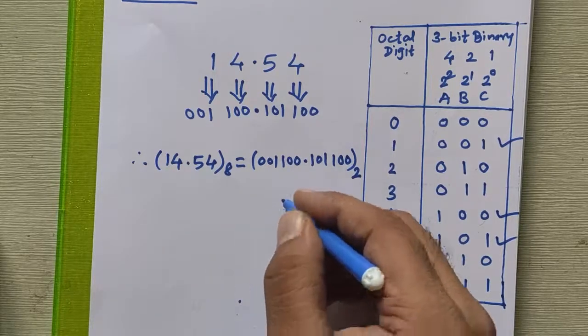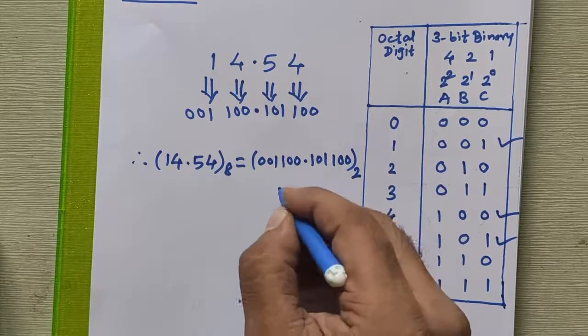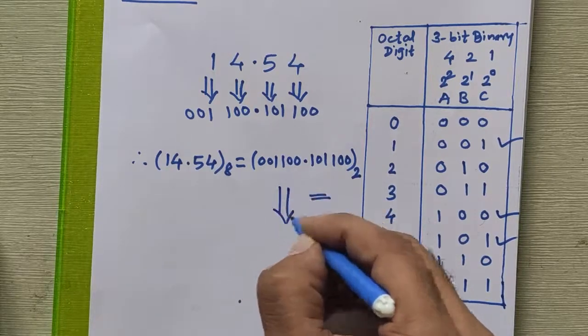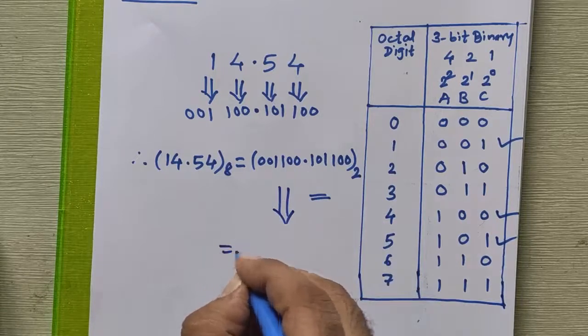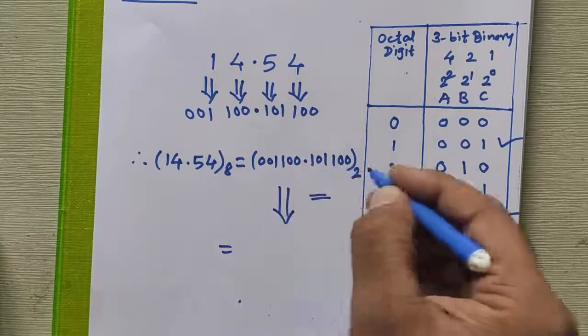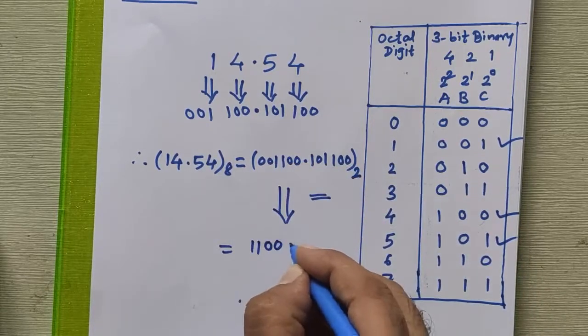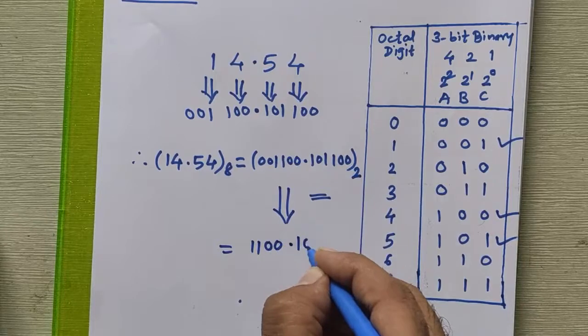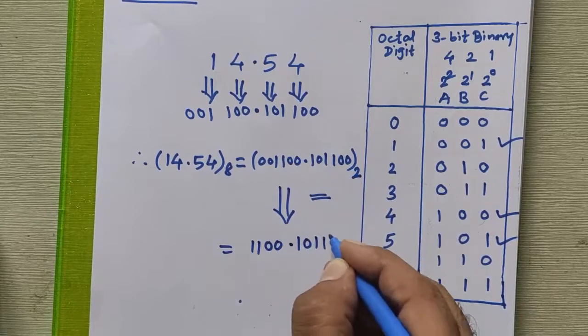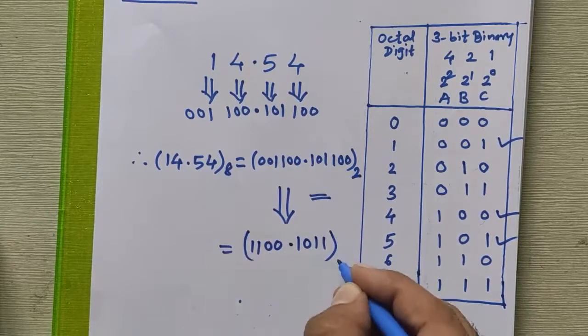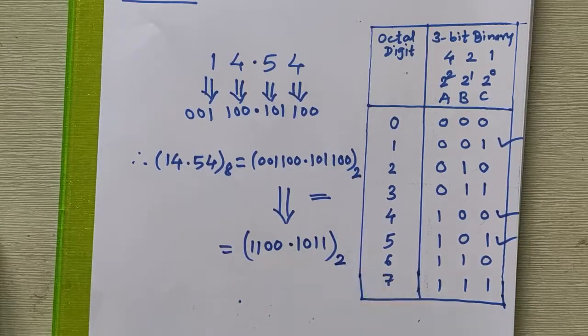This is also equivalent to — we can discard the leading zeros — giving 1100.1011 in binary. This is our final result.